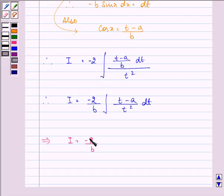Minus 2 upon b. On separating the integral we have t upon t square dt minus integral a upon t square dt.